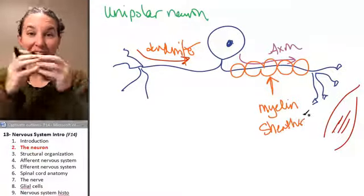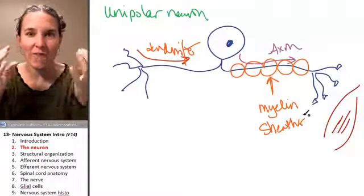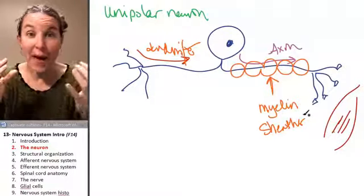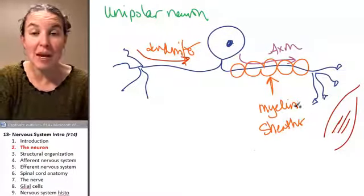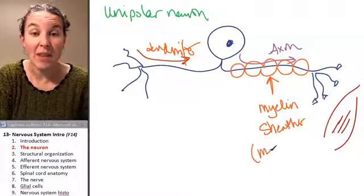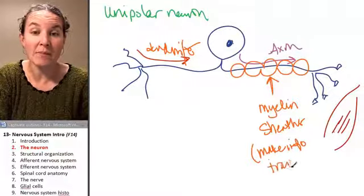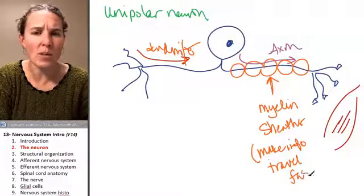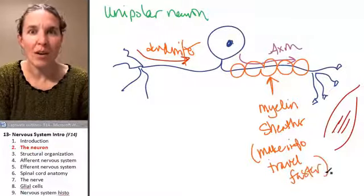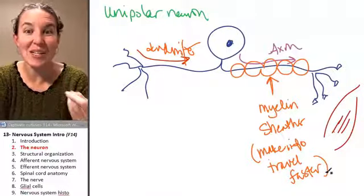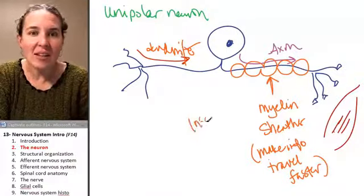So the axon can be covered with fat, little fat blobs. And these myelin sheaths make the information go faster. They make info travel faster. And what was our info? Electricity.